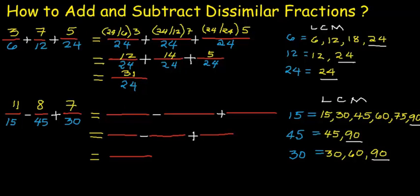For the second problem, we have 11 over 15 minus 8 over 45 plus 7 over 30. Let's find their lowest common denominator by finding their LCM. Multiples of 15: 15, 30, 45, 60, 75, 90. For 45: 45 and 90. For 30: 30, 60, and 90. Our common multiple is 90.